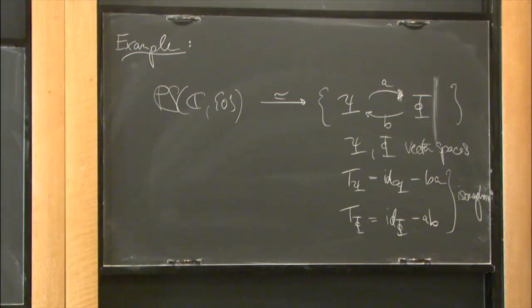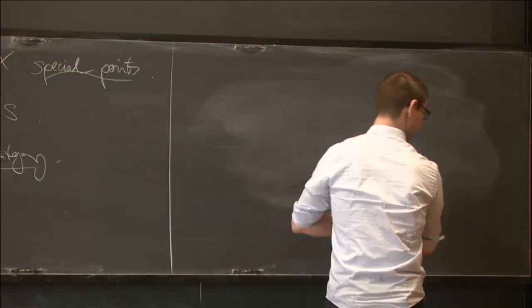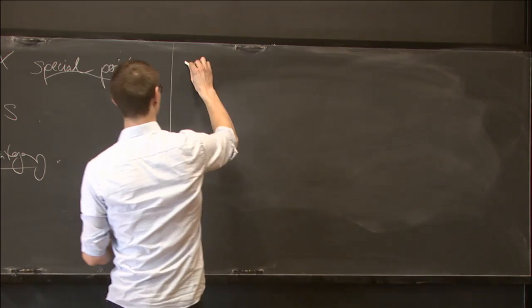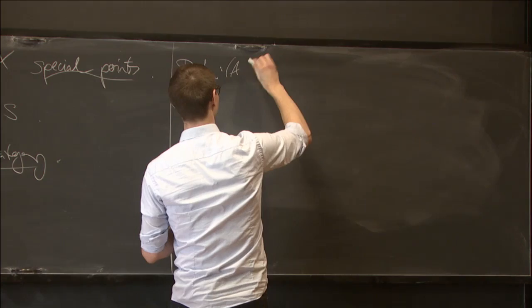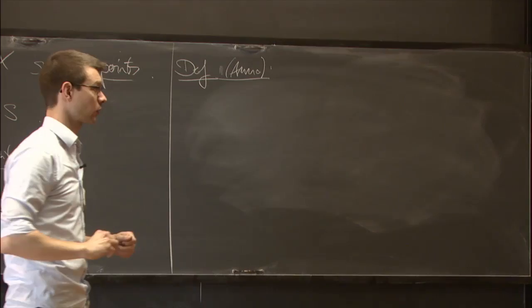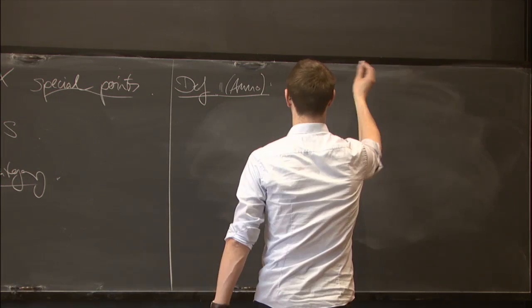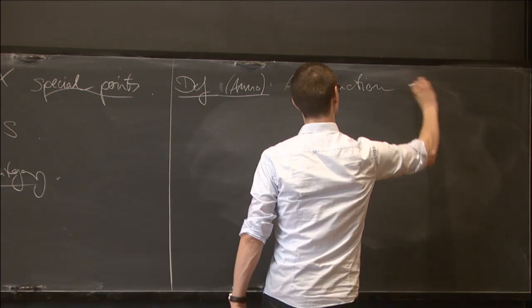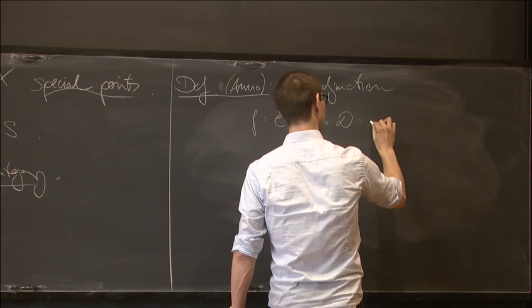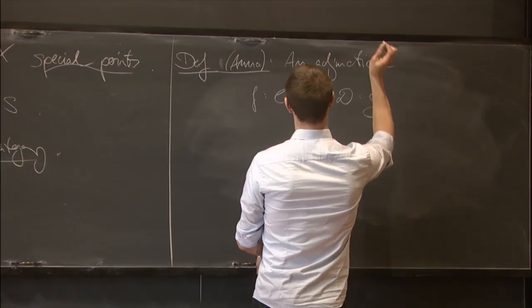Now let me make another definition in an a priori somewhat different context, but it's hard to miss the formal analogy. This notion — initially given by Reno Anno — I'm going to reformulate in terms of stable infinity categories and adjunctions. An adjunction F, G of stable infinity categories is called spherical if the following holds.